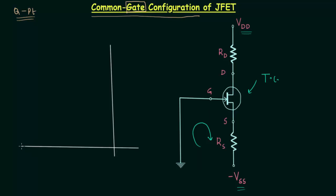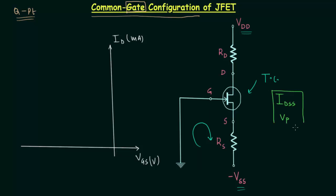I will first plot the transfer curve. The X axis is the axis of input voltage VGS in volts. The Y axis is the axis of output current, that is the drain current in milliamps. The maximum drain current IDSS and the pinch-off voltage VP are known to us. When VGS is equal to 0V, drain current ID is equal to IDSS.